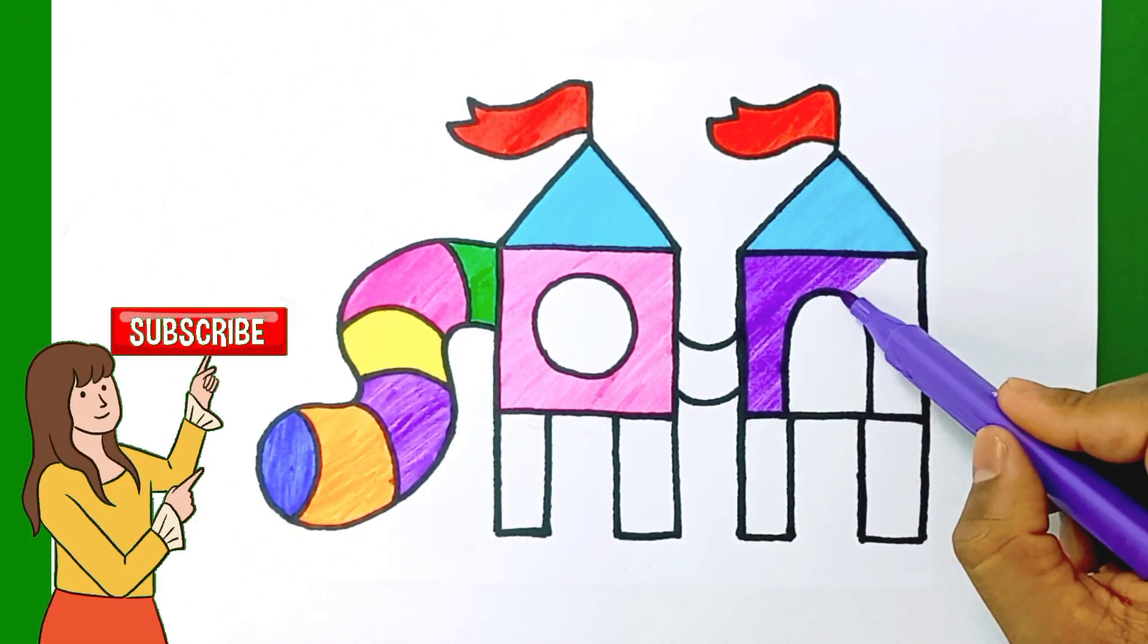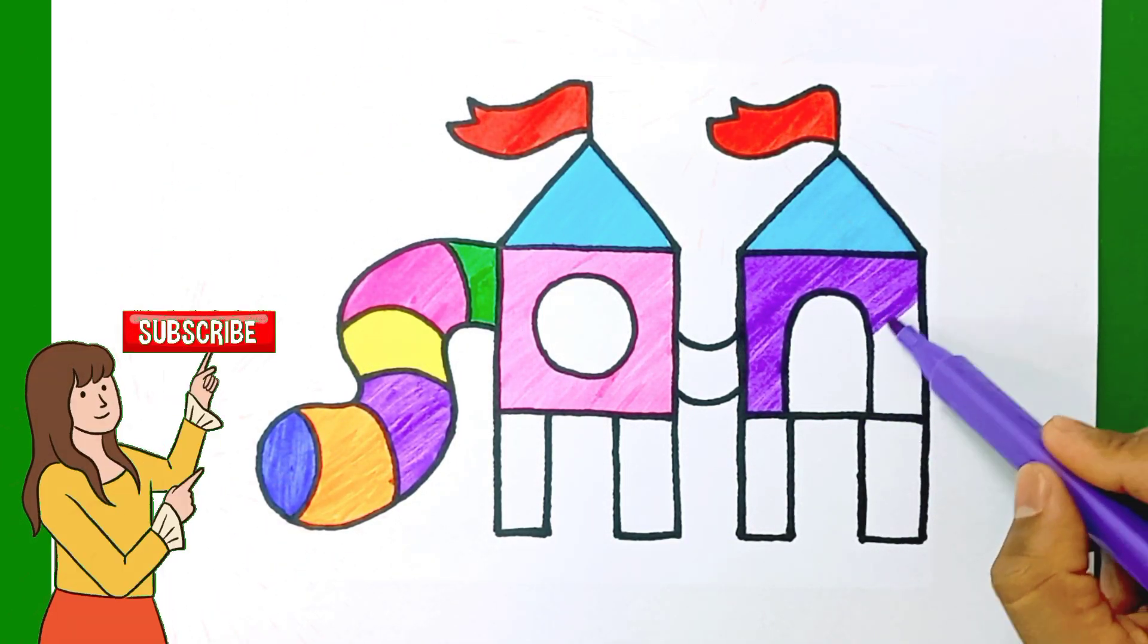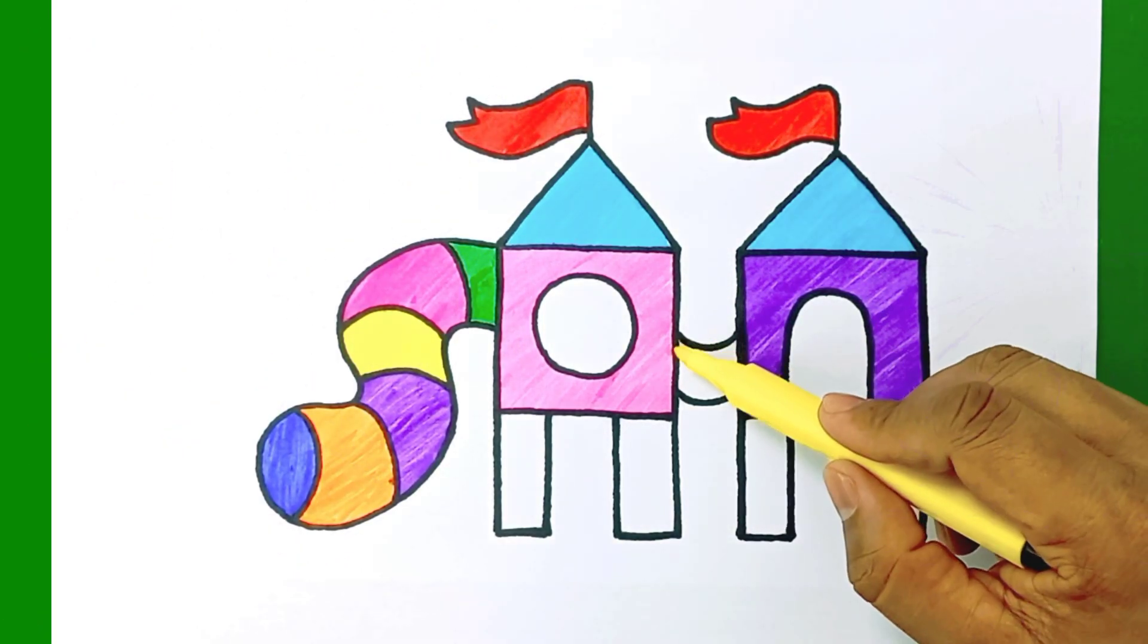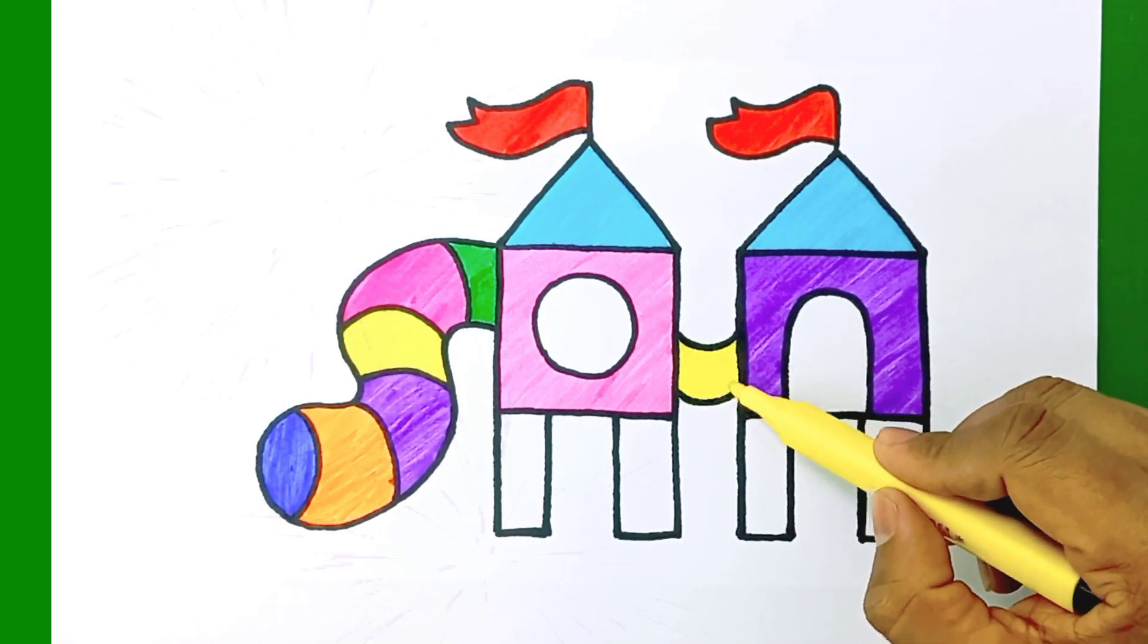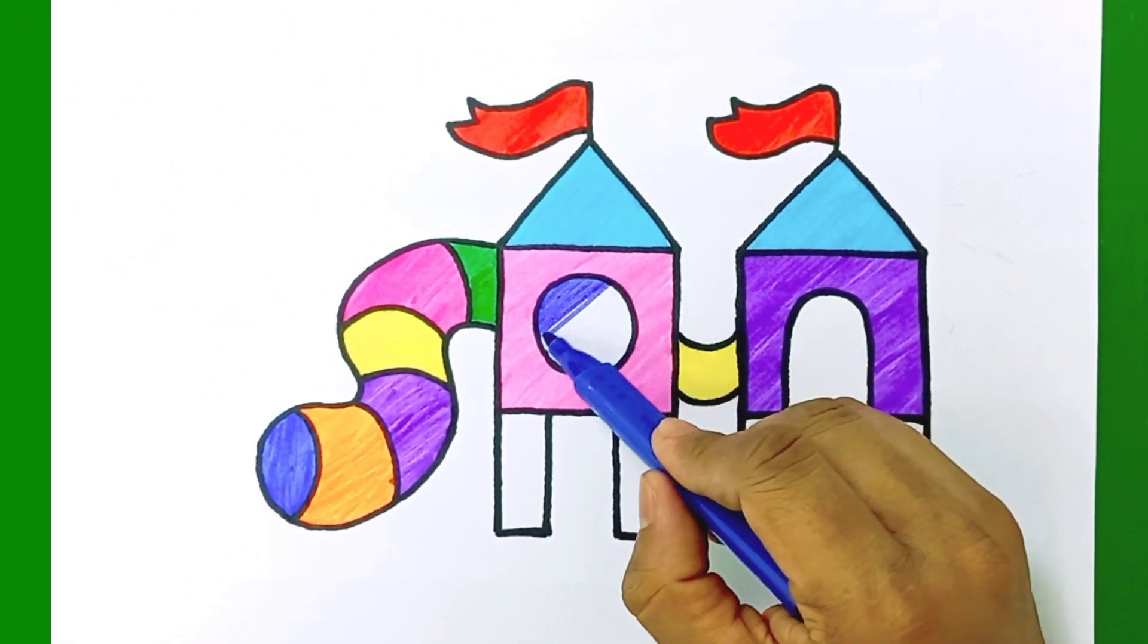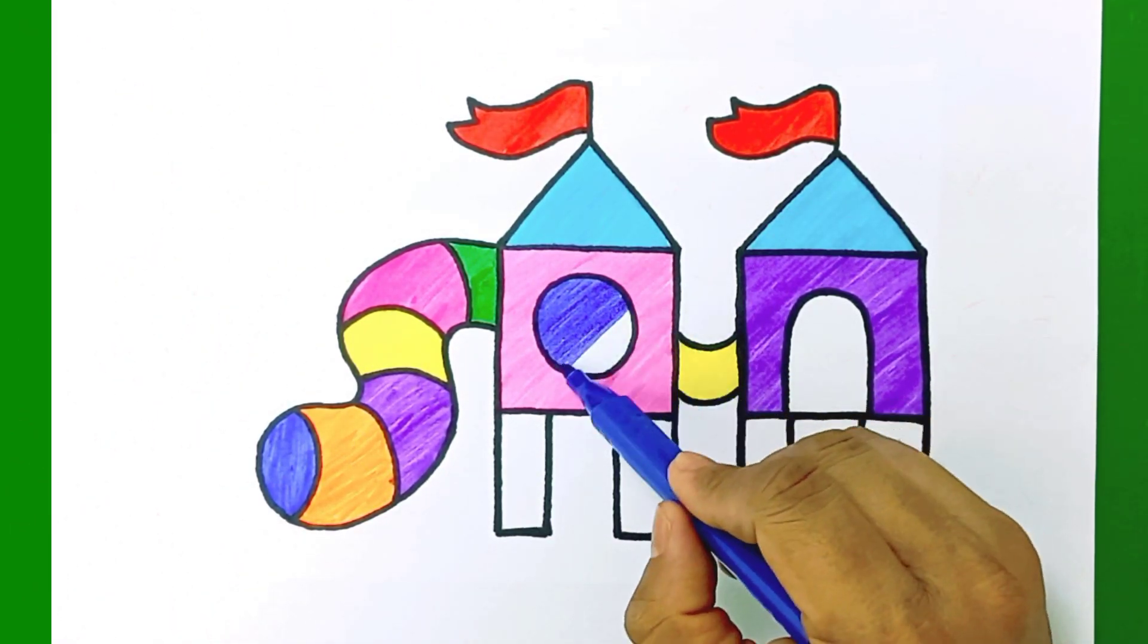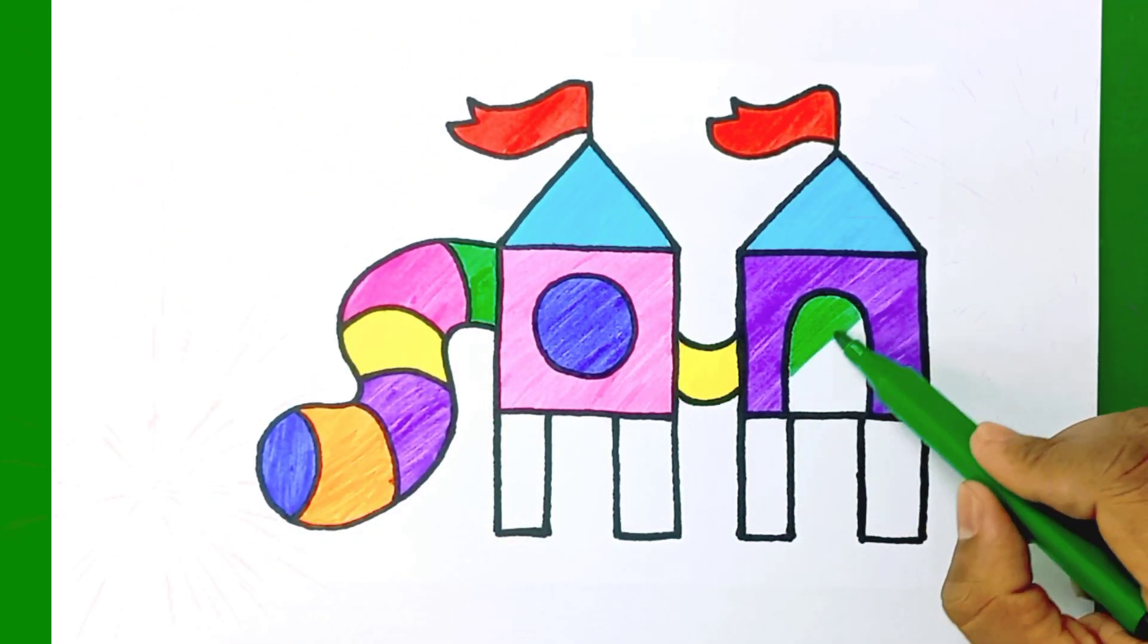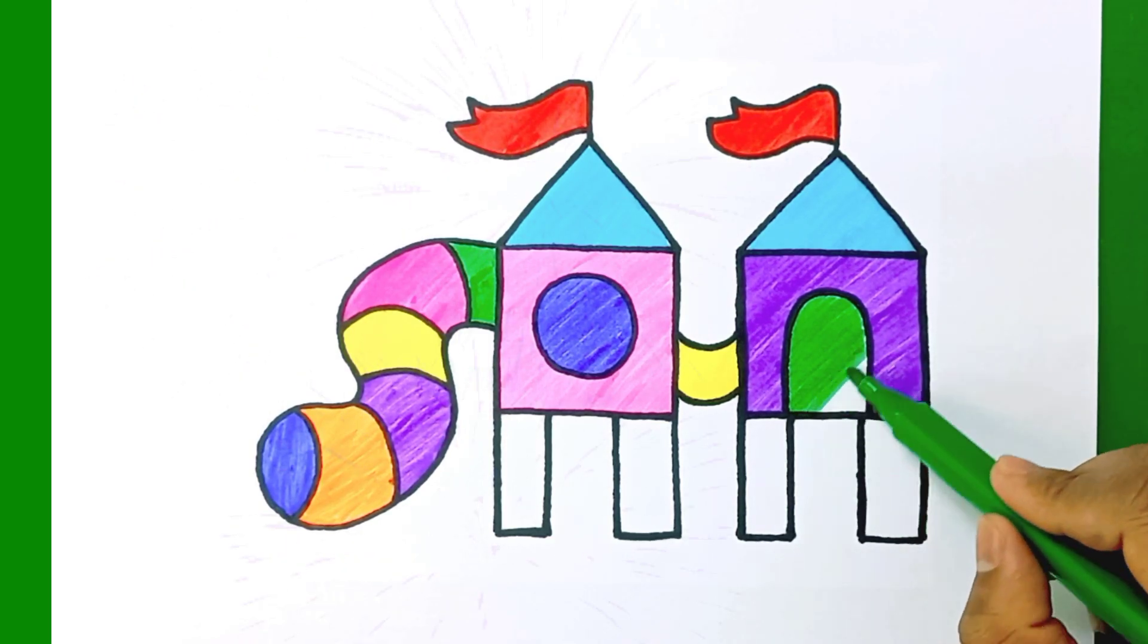A, B, C, D, E, F, G H, I, J, K, L, M, N, O, P Q, R, S, T, U, V W, X, Y, and Z. Now I know my ABCs. Next time won't you sing with me?